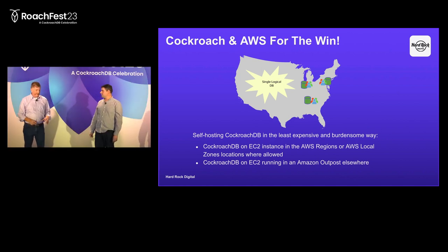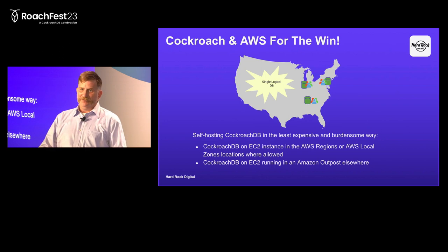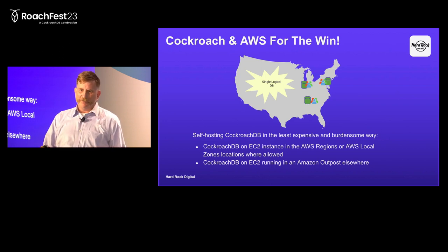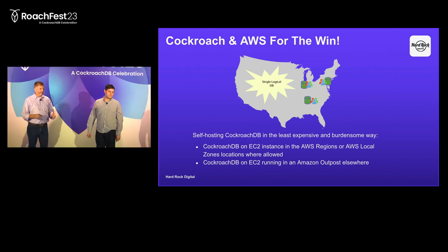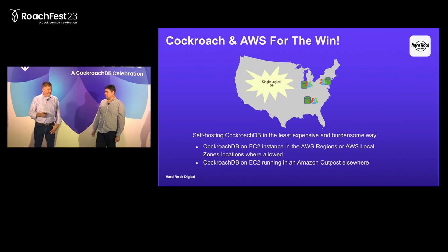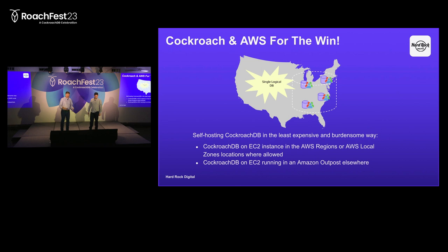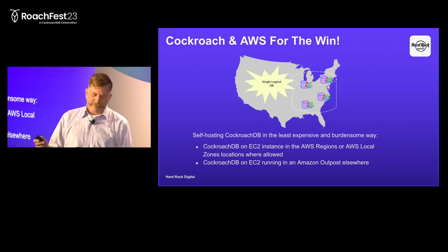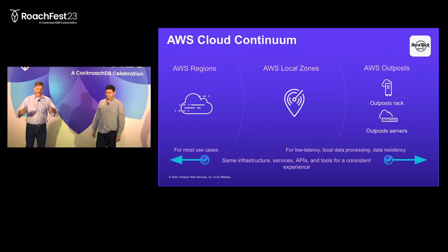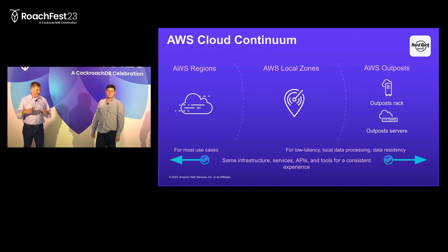Expanding on that: instead of having seven databases spread across the United States, we have one logical database, one logical system, one thing we're managing and running regardless of the jurisdiction. We're not having to invest all the capital to manage and monitor these disparate installations. We collapse the database into CockroachDB and then distribute the nodes to the geographic locations needed to meet residency requirements — data residency and compute requirements. CockroachDB is at the core — that's the crown jewels. Our application runs on top of that.